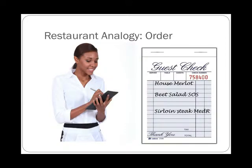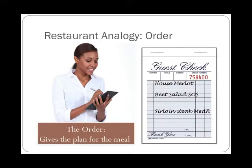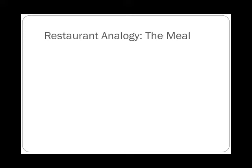So after the host, then next comes your interactions with your server. And probably one of the most integral parts of your experience at the restaurant is your order. When you have your order, it's really important because it's going to guide everything else for the rest of your stay at the restaurant. So let's say in this example that you order the house Merlot, the beet salad, and then the sirloin steak medium rare. Your server writes that down and then facilitates those things coming out to you in the right order. The order is really important because it gives the plan for your entire meal.